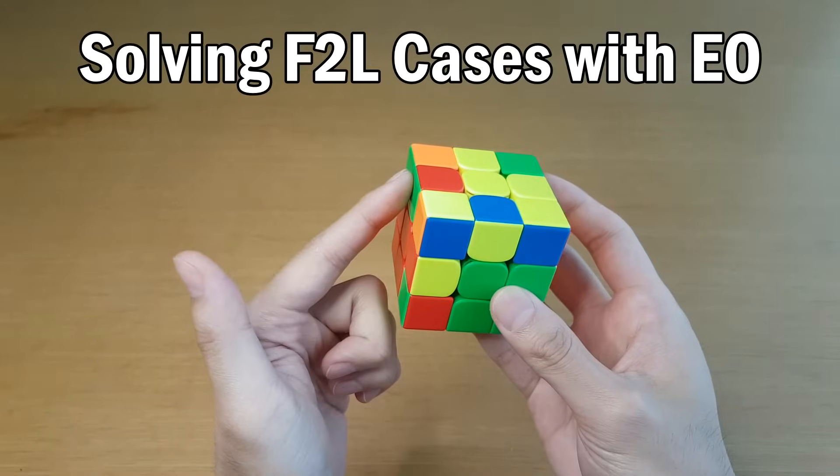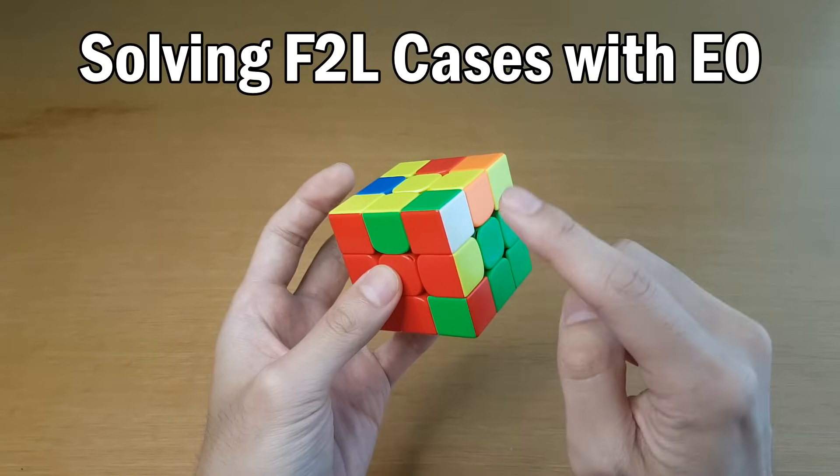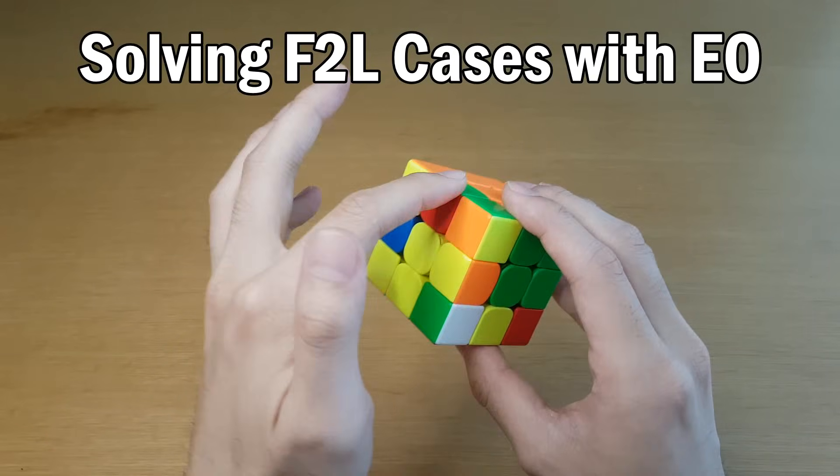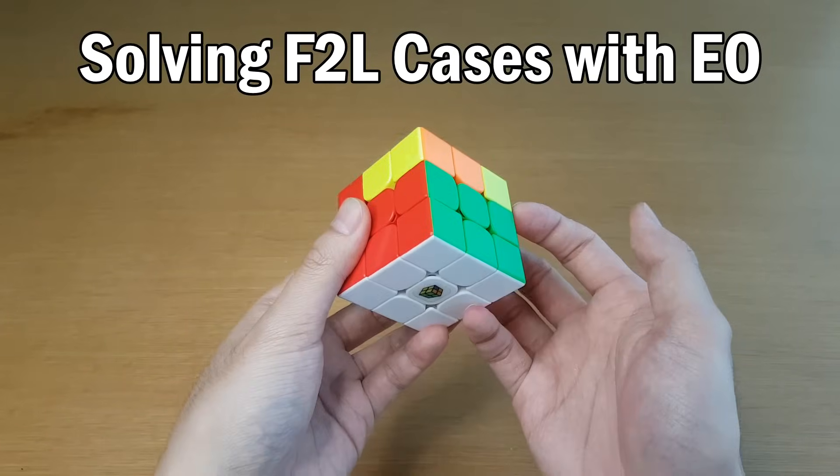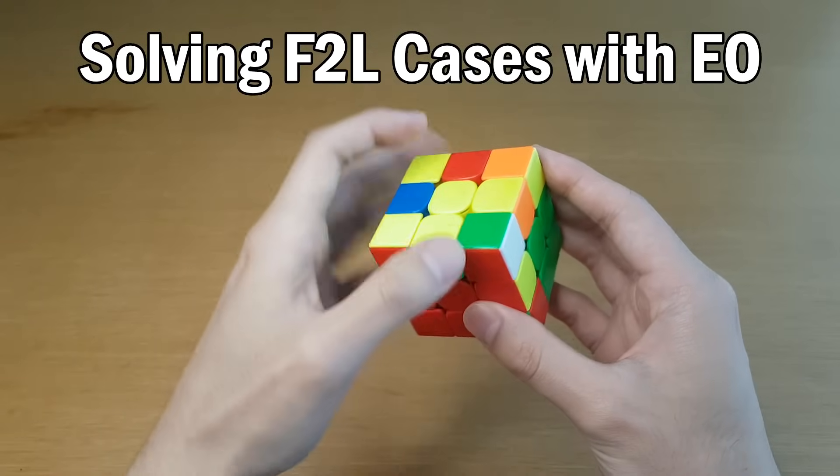So anytime you have a bad edge, you can just rotate and make it a good edge. And then you can try and solve this F2L case by just seeing where the corner is and knowing where the edge is. And then you can just solve it like that, assuming it is the case that doesn't need you to rotate.